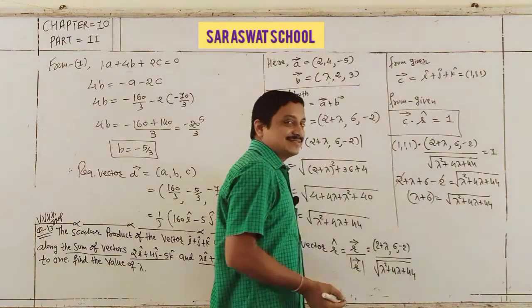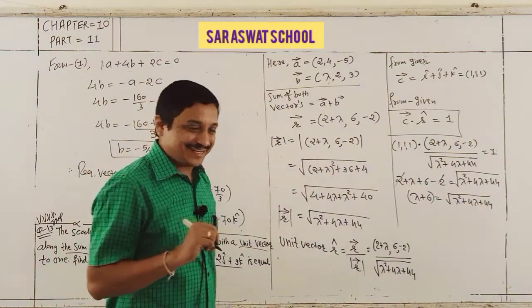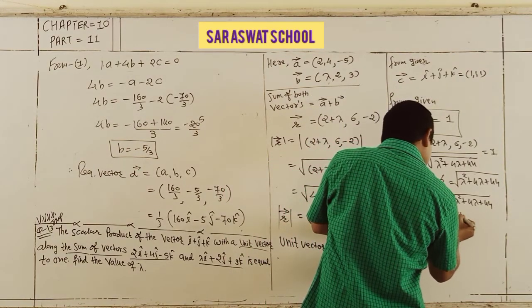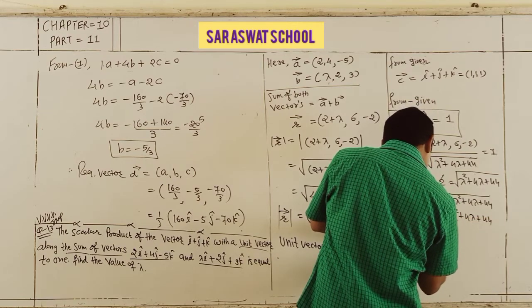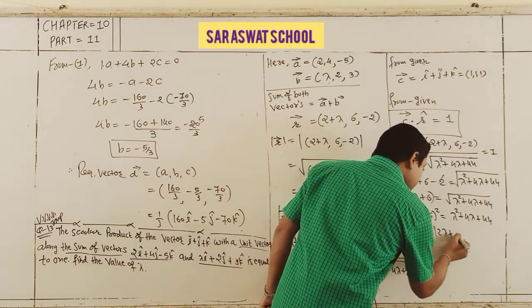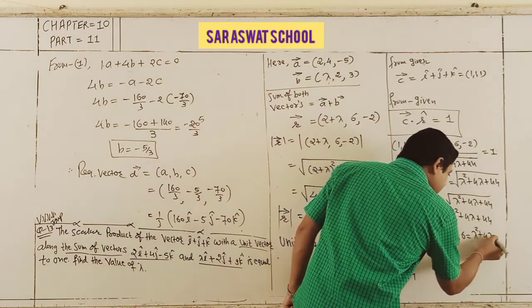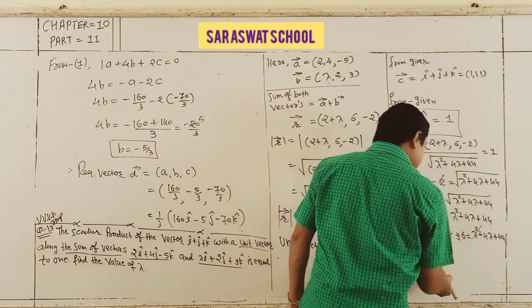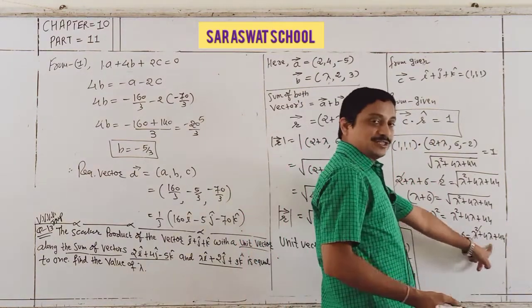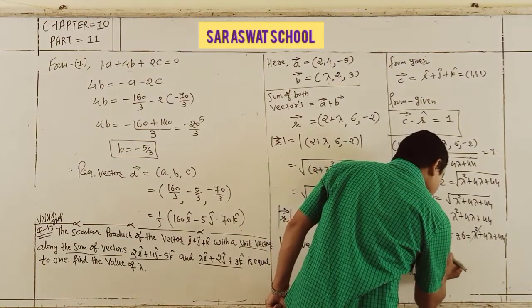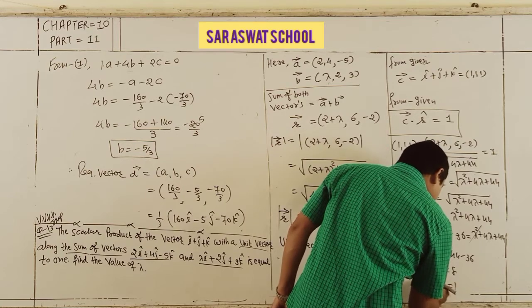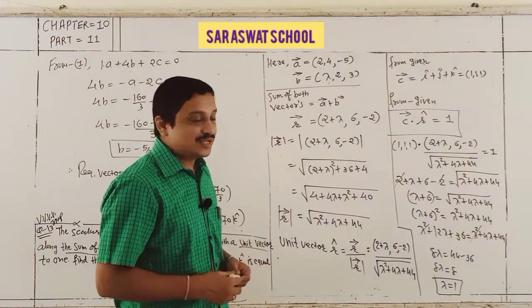Squaring both sides: (λ + 6)² = λ² + 4λ + 44. Expanding: λ² + 12λ + 36 = λ² + 4λ + 44. The λ² terms cancel, leaving 8λ = 8, so λ = 1.